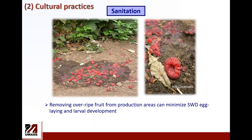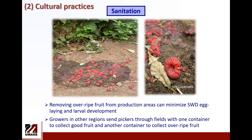The second step in the 1-2-3 approach is implementing at least one cultural practice. The first, even though very simple, is very effective: sanitation. Just by removing overripe fruit from the ground and from the plants, you can minimize egg-laying activity and larval development. Growers in other regions are sending pickers to the field with two containers — one for marketable fruit, and one for spoiled fruit that needs to be removed from the field.